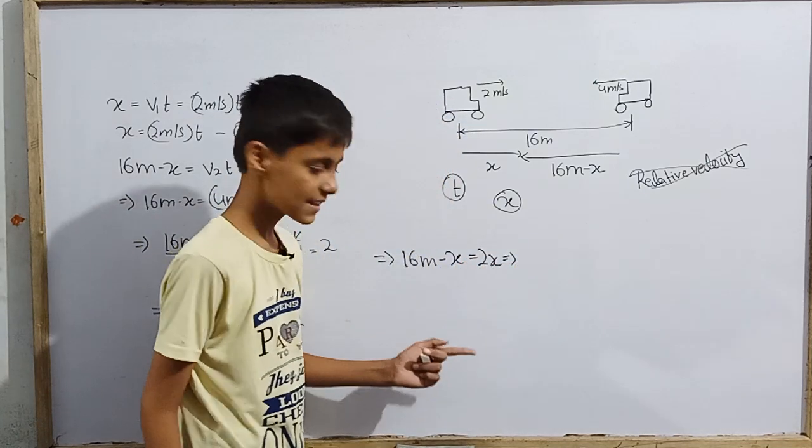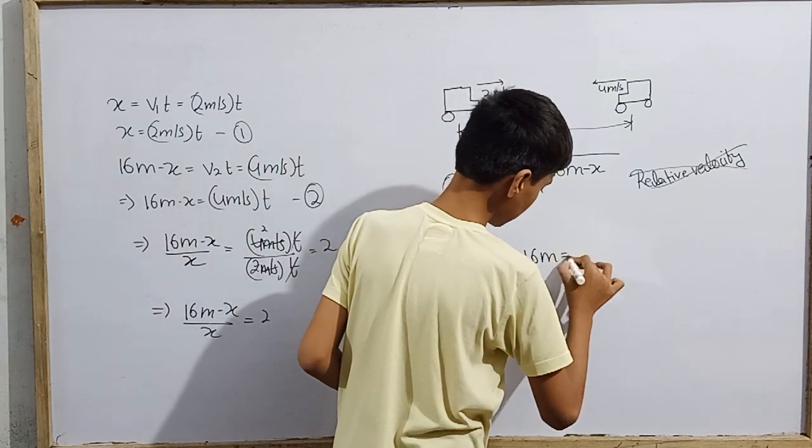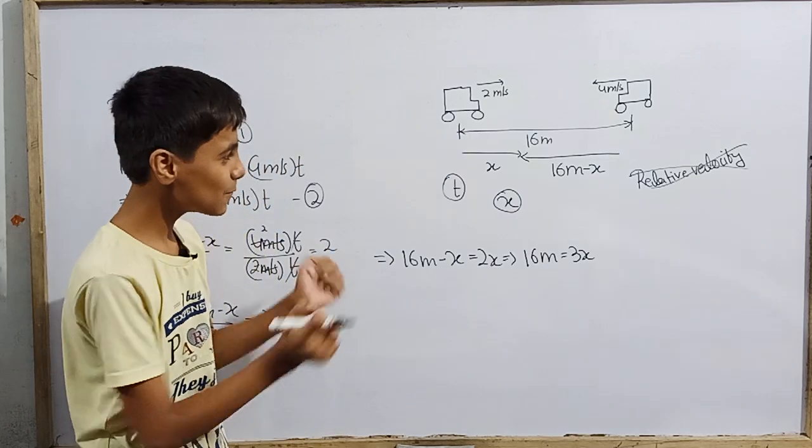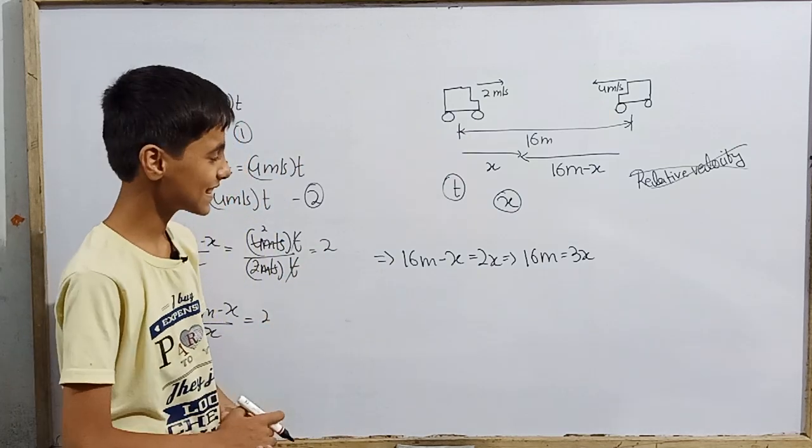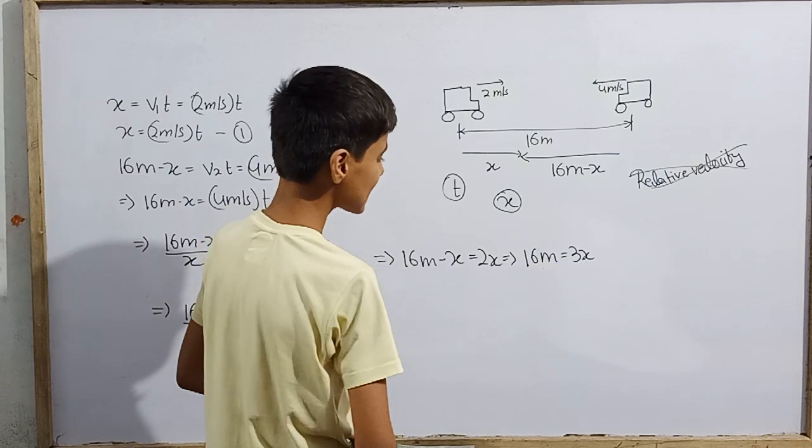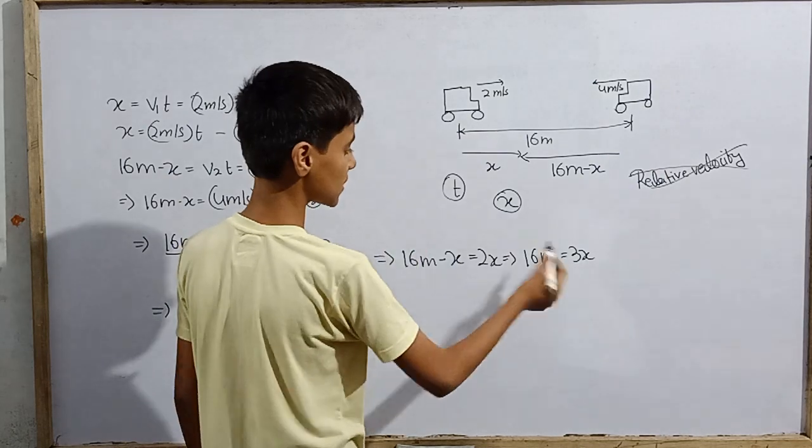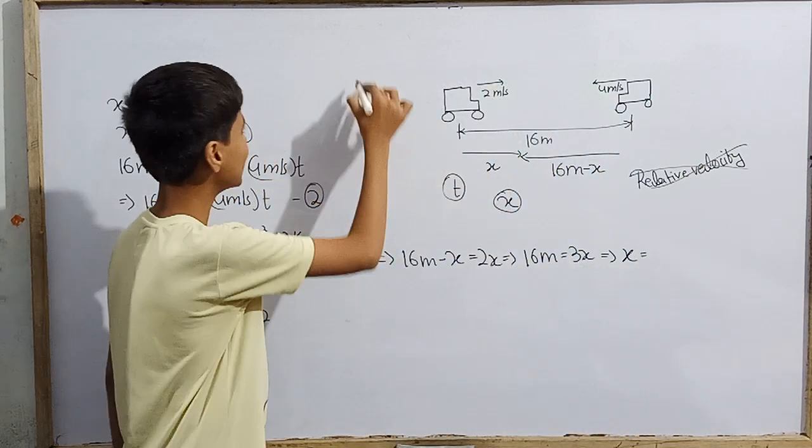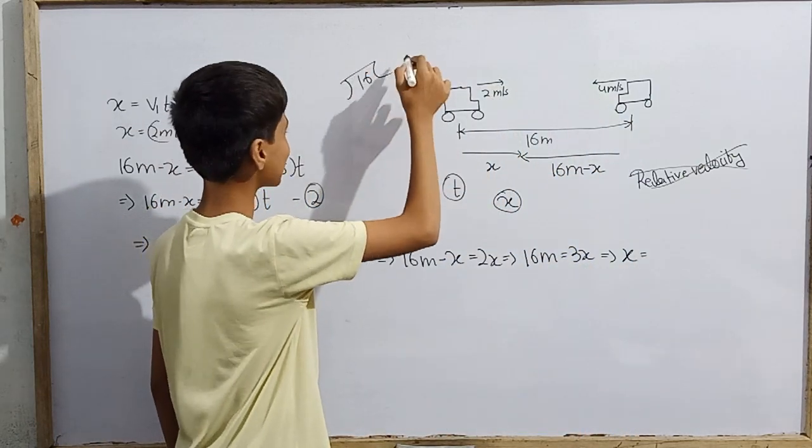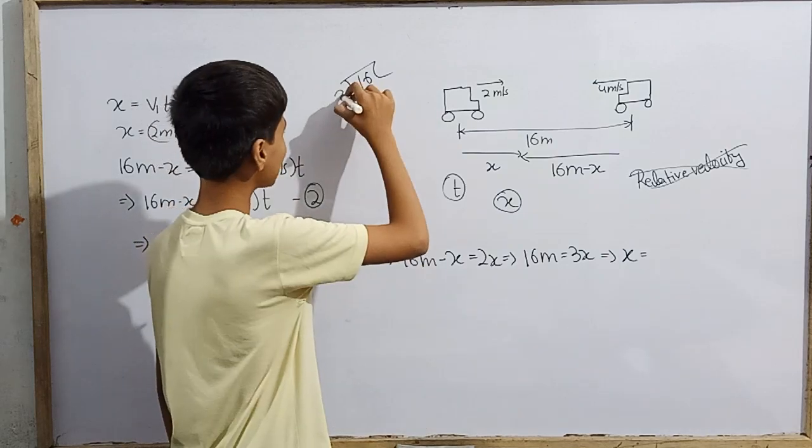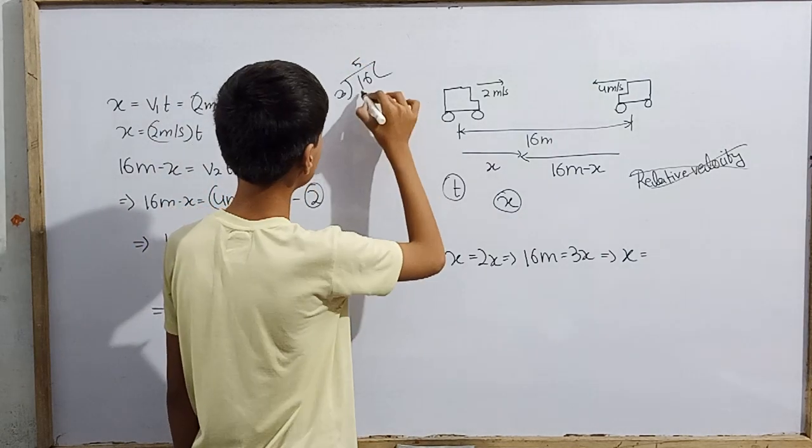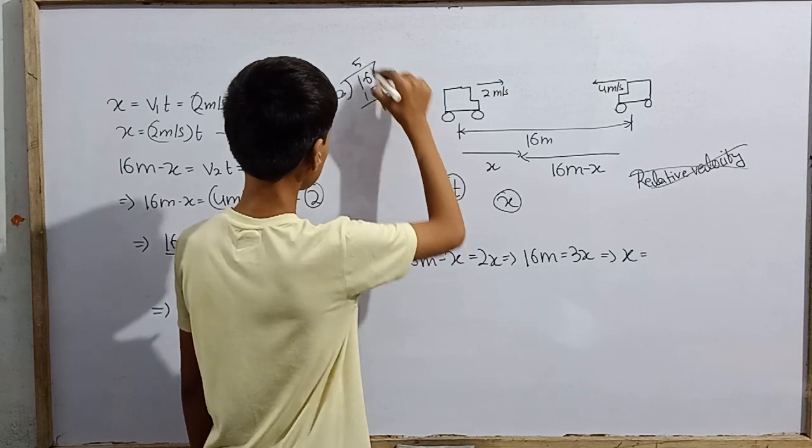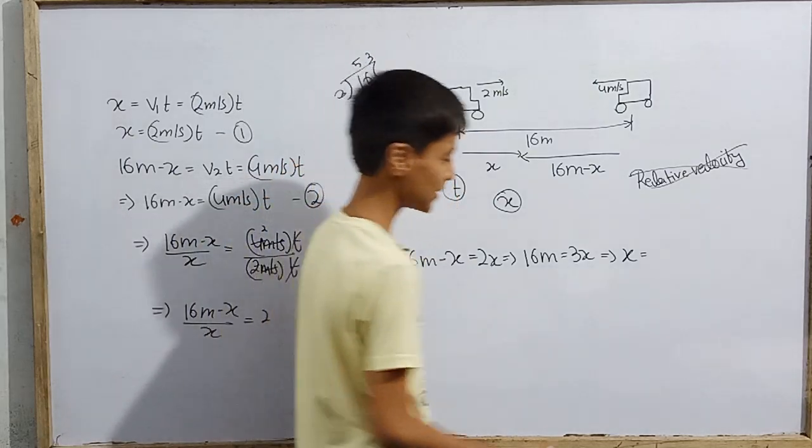So 16 meter minus x equals 2 times x. Cross multiplication. Adding x, we get 16 meter equals 3 times x. Now we can easily calculate what will be x. X is 16 meter over 3. Let us try dividing: this is 5 point 3 repeating. So this is 5.34 meters.